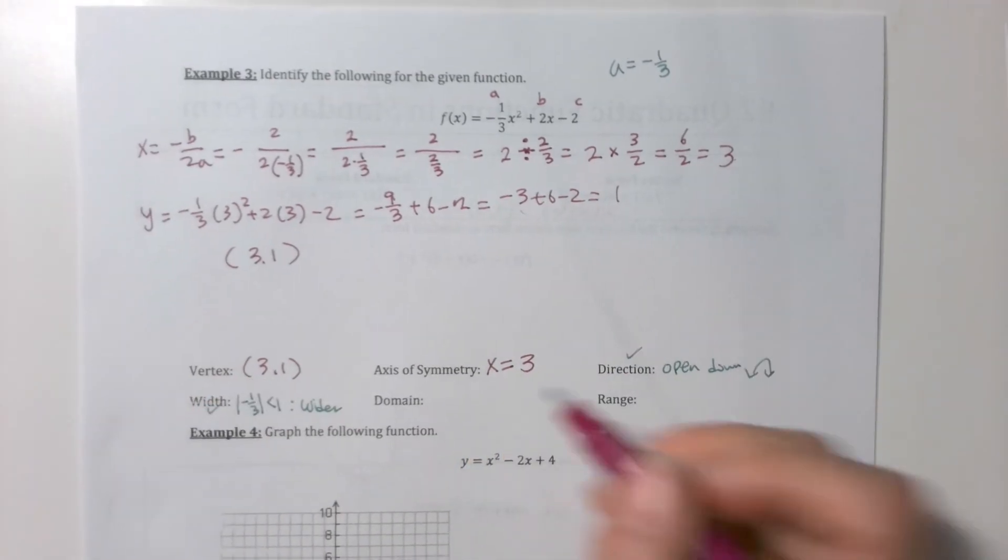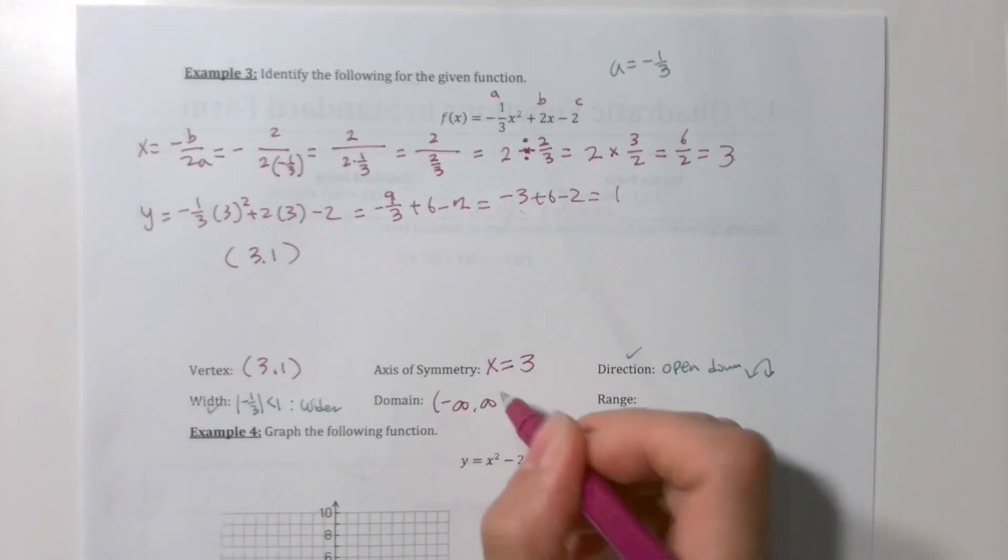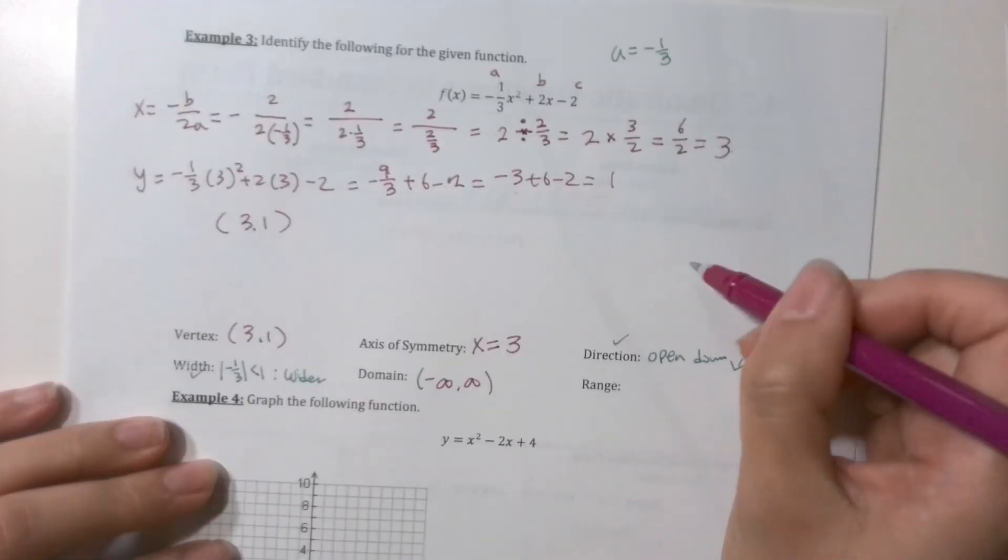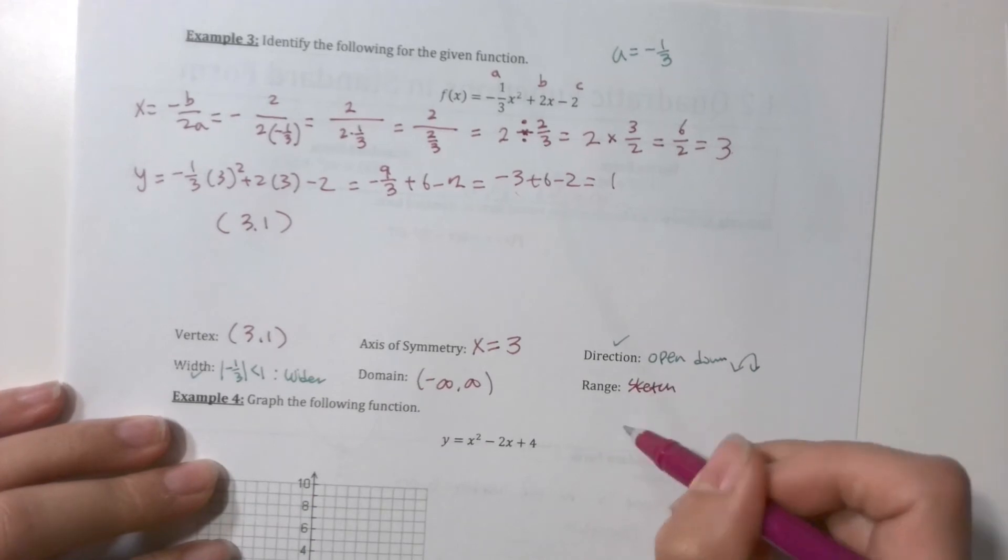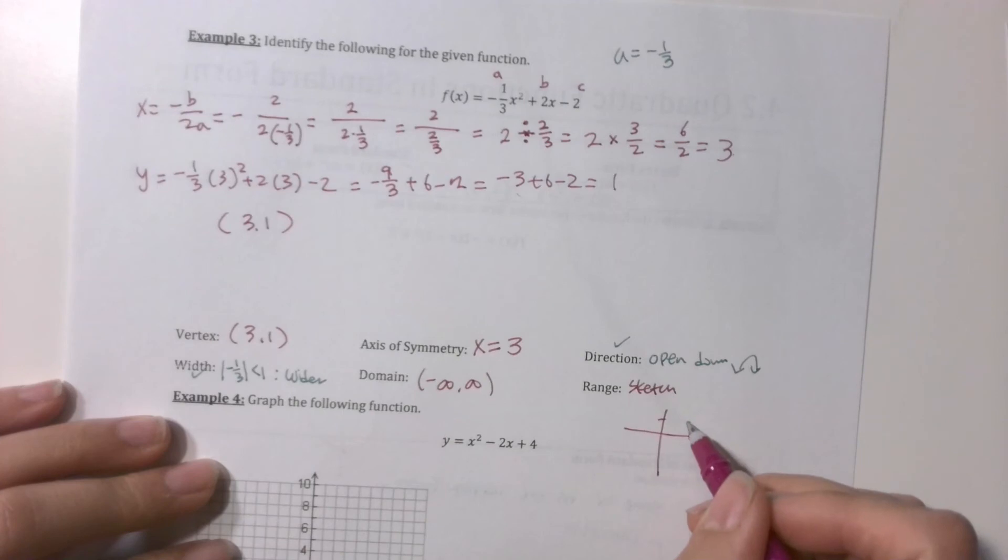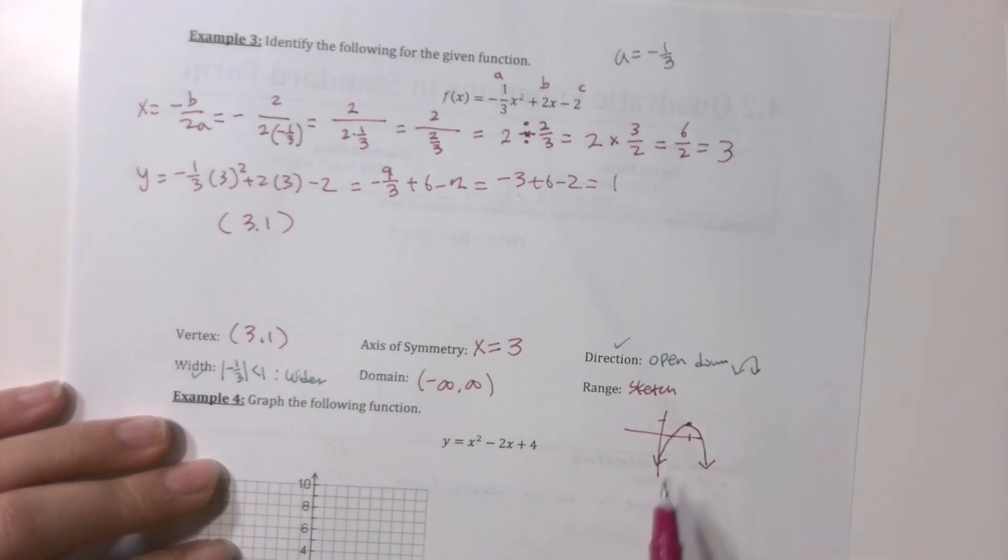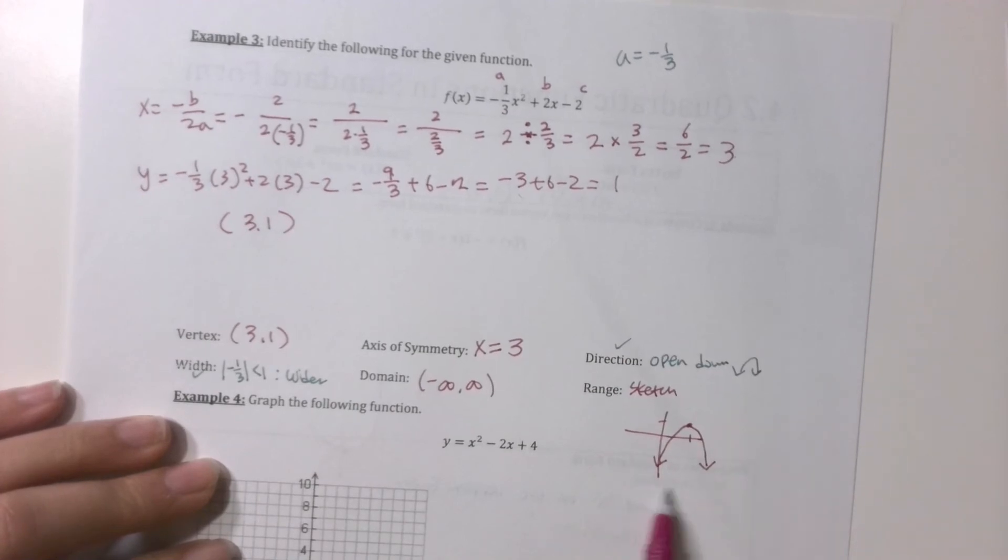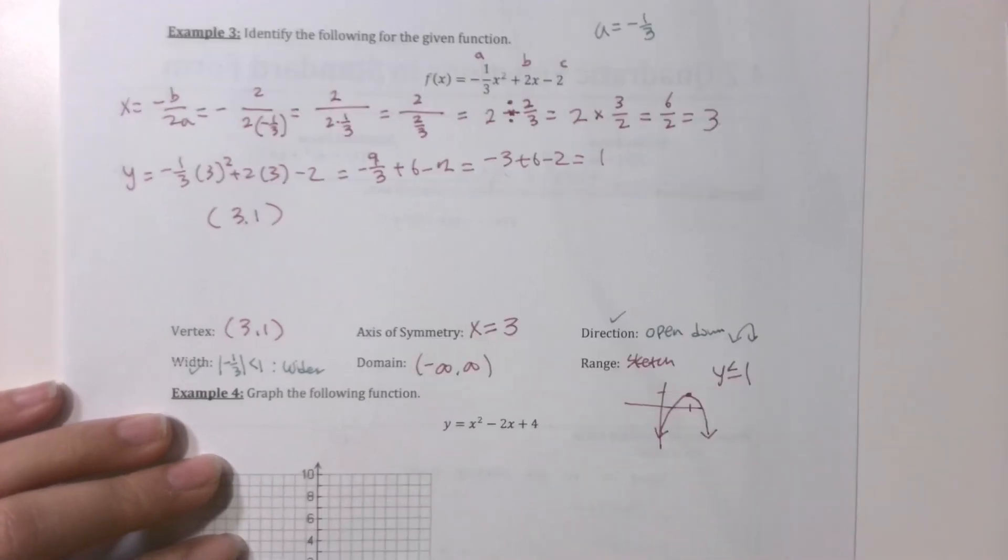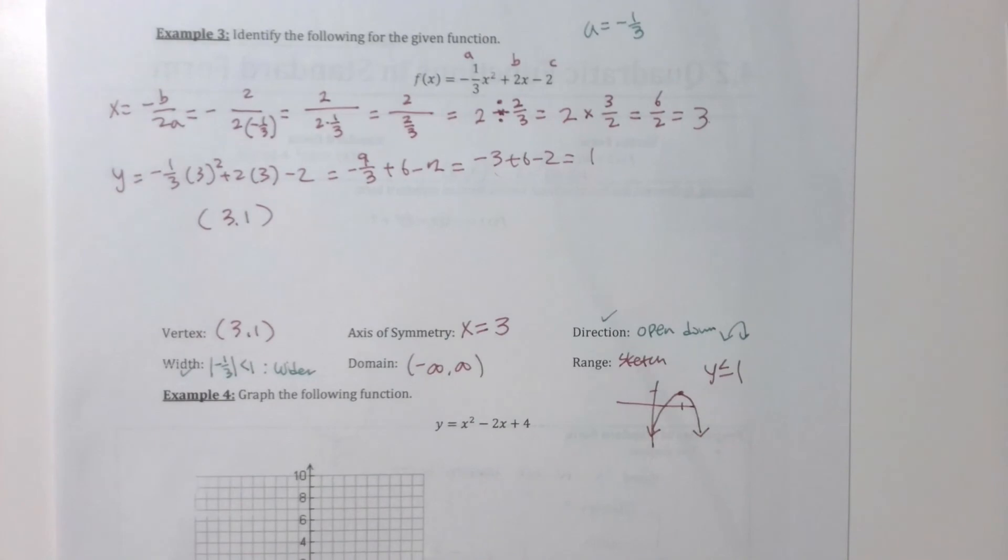Domain quadratic function. Domain is always negative infinity to positive infinity. What about the range? That one's a little tricky. What you need to do is you need to sketch it. With all the information. So vertex at 3 comma 1. It opens down and it's wider. So it's going to look like this. So what kind of y value do we have? We have y has to be less than or equal to 1. So that's how you do the range one. Range will be the tricky one.